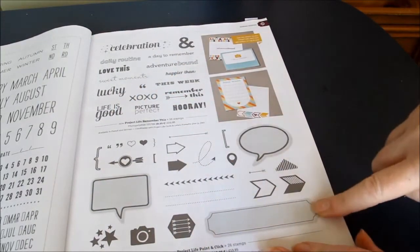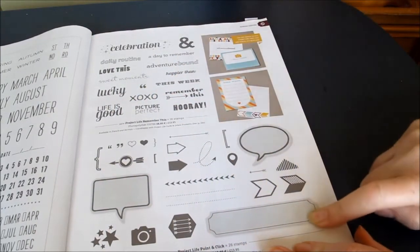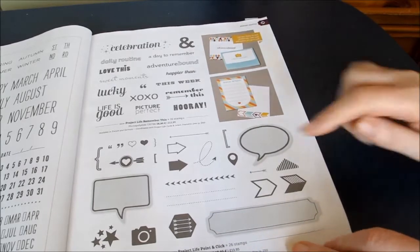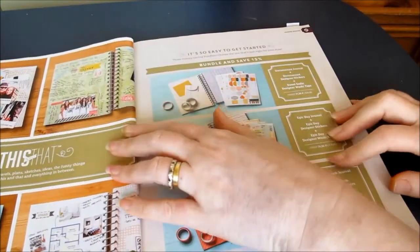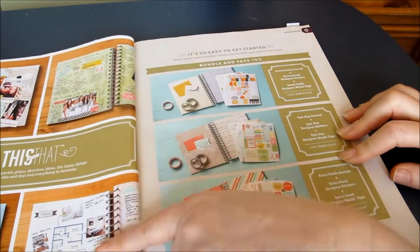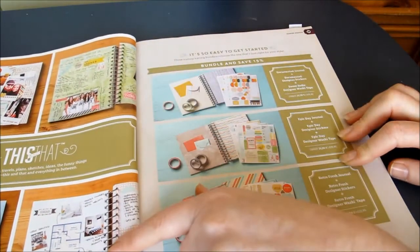So that die set was out of that set. And you've got arrows, cameras, stars, hearts. And if I just turn the page quickly, I mentioned This and That. This is the This and That albums. That's some of the uses that they've had for them.